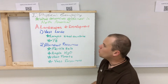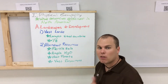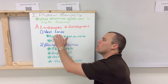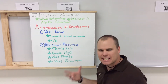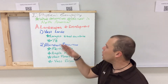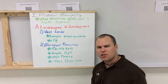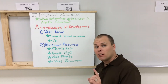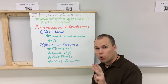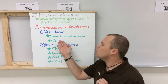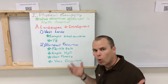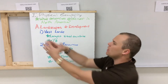The first subsection looks at landscapes and how landscapes play into development. There are vast lands — the United States and Canada are huge, two of the largest countries in the world. Russia is number one, Canada is number two, and the United States is number three. Put Canada and the United States together and you're looking at an eighth of the world's total land mass.